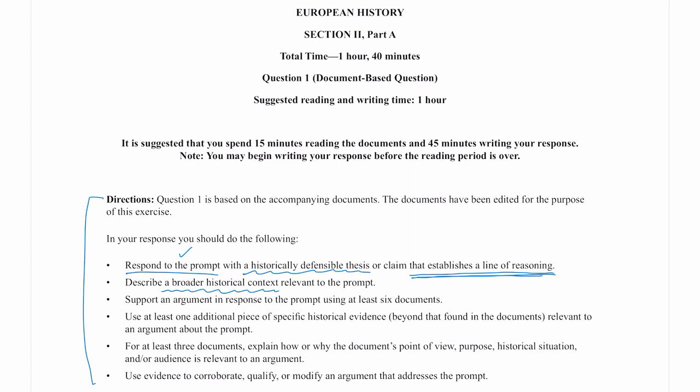I need to support an argument in response to the prompt using at least six documents — if I use six documents, I will get that first evidence point. The fourth bullet point says I need to use at least one additional piece of specific historical evidence, something really concrete beyond what's found in the seven documents, relevant to an argument about the prompt. I need to make sure I use some outside evidence to try to get that point.